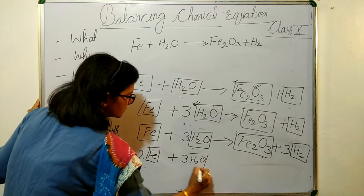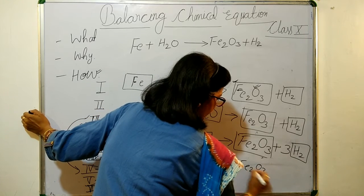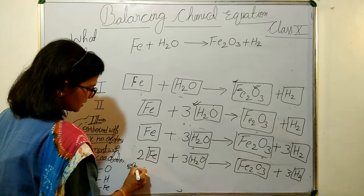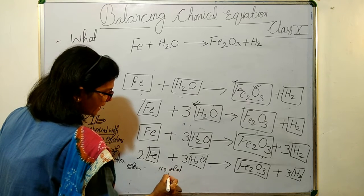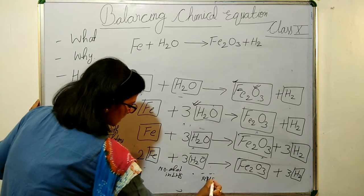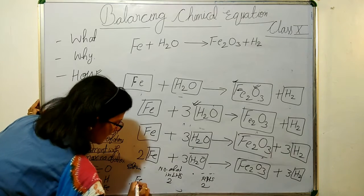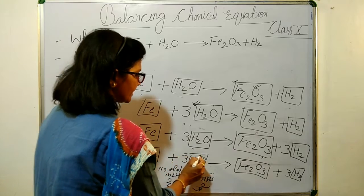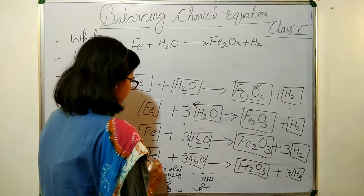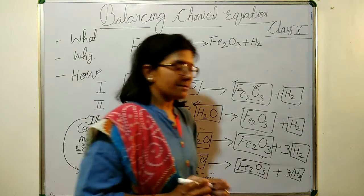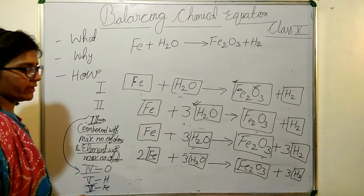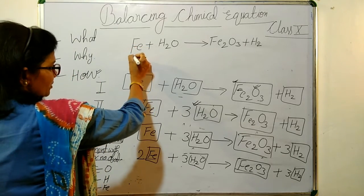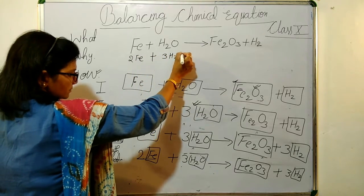To balance Fe, we put 2 in front of Fe on the LHS. So our balanced equation becomes: 2Fe plus 3H₂O gives Fe₂O₃ plus 3H₂. Final check: Fe is 2 on both sides, hydrogen is 6 on both sides, oxygen is 3 on both sides. The equation is now fully balanced.